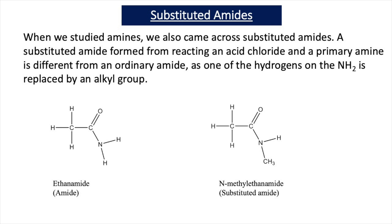A substituted amide is different from a conventional amide in that one of the hydrogens on the NH2 group is replaced by an alkyl group. So here we have ethanamide — a conventional amide — and if we replace one of the hydrogens with an alkyl group, say a methyl group, we have a substituted amide. Because the methyl group has replaced a hydrogen bonded to nitrogen, we name this N-methyl ethanamide. If we had a C2H5 group replacing a hydrogen, we would name it N-ethyl ethanamide.